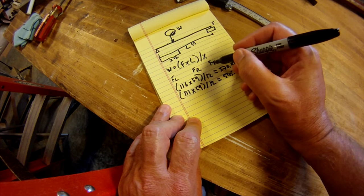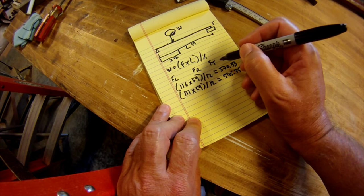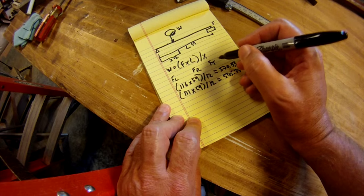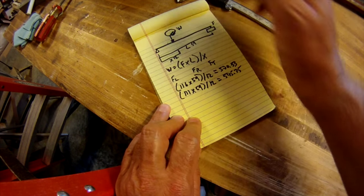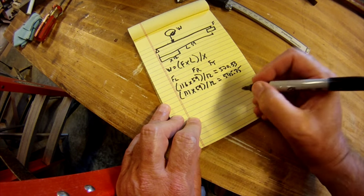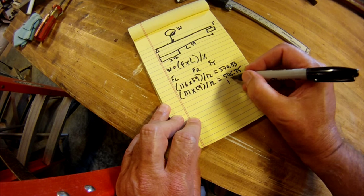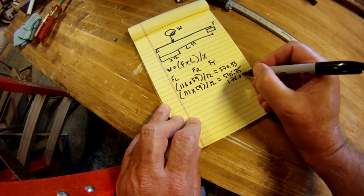And then the last number is F T. And F T, we know what that is. That didn't use any of this lever or anything like that, so that's just a direct measurement. And that was 176 pounds.